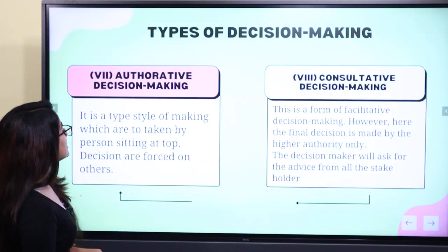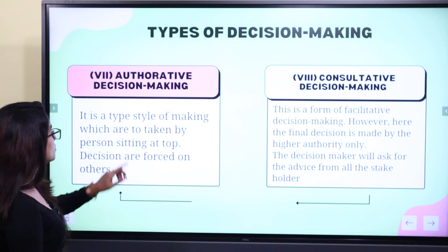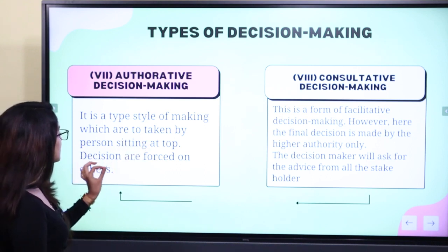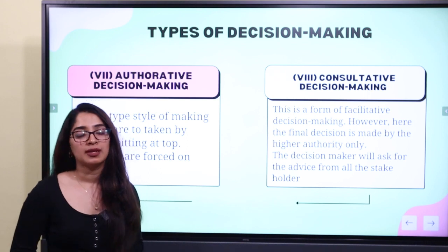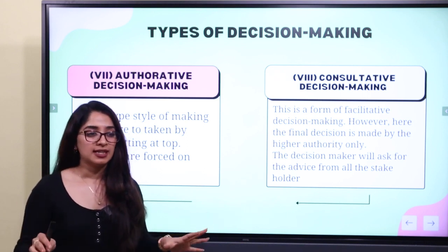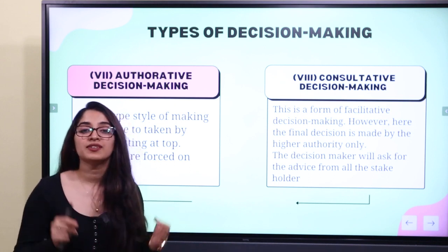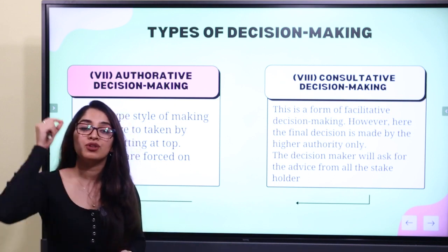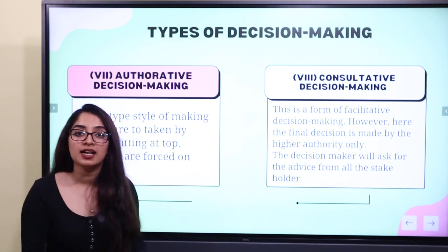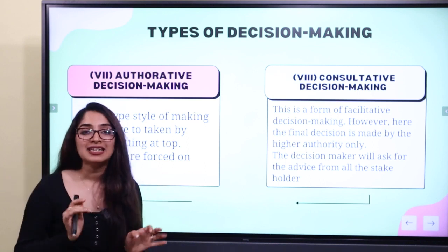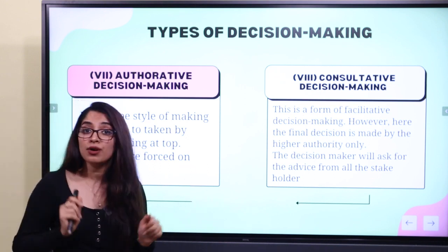There is also authoritative decision making — a type of style where decisions are taken by the person at the top. For example, a boss comes and says 'this is the schedule you have to follow.' That is a decision we have to follow. The authoritative figure is the one on top, and we have no option other than to follow it.